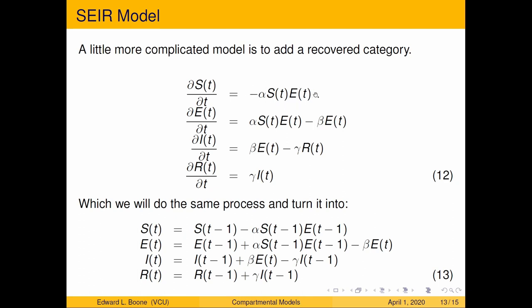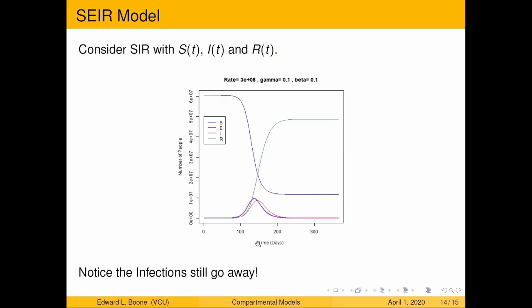We go from being susceptible to being exposed. Now we've got it. We're walking around, we're not sick yet. Then we become sick, and then we recover from being sick and move to here. So we move down through these states. This is becoming more and more realistic. And if you turn this into a difference equation, this is what it looks like.